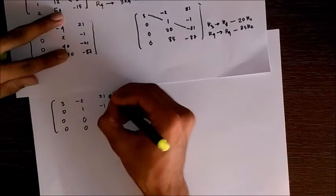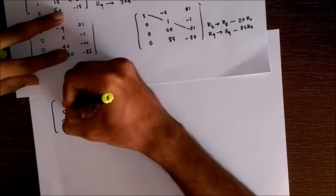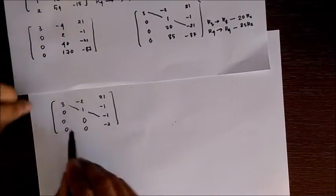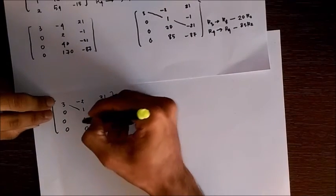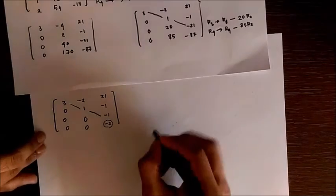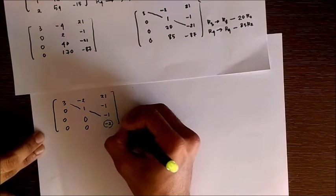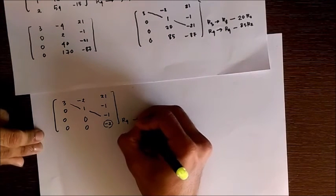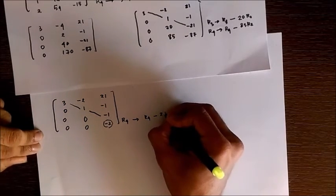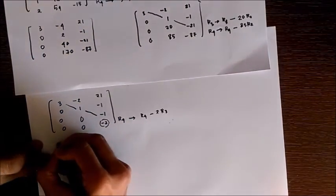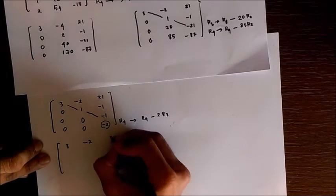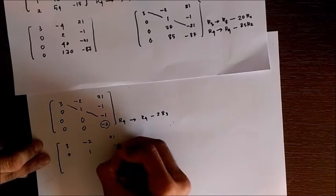Now the only remaining element is minus 2 right here, so we apply one more transformation: r4 is r4 minus 2r3. This gives us the final matrix as 3, minus 2, 21, 0, 1, minus 1, 0, 0, minus 1, and 0, 0, 0.